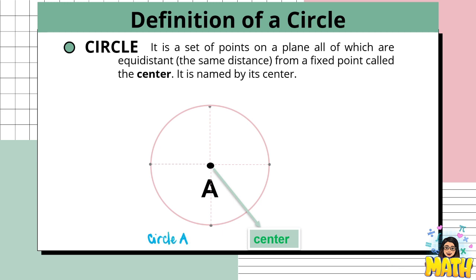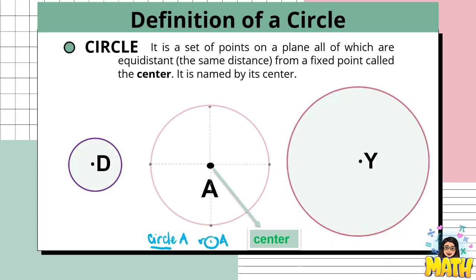A circle is named by its center. So this circle is named circle A. You can use the word circle or you can use the circle symbol. You can have more circles, such as circle D and circle Y. Again, circles are named using their center.